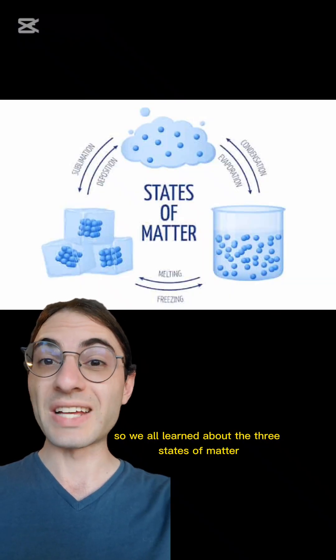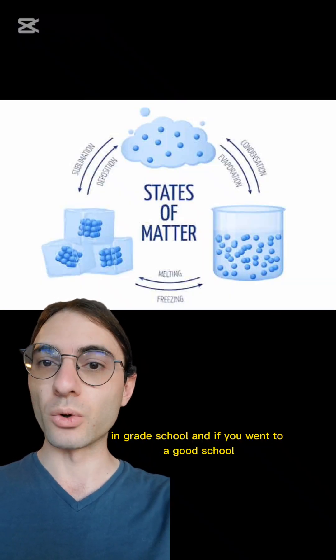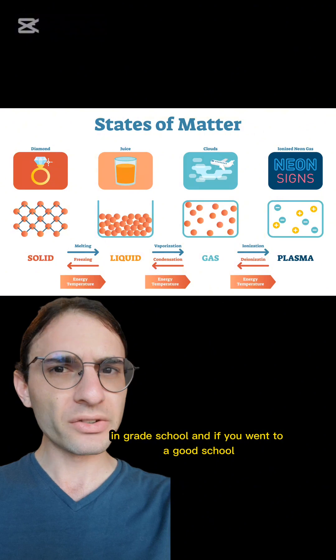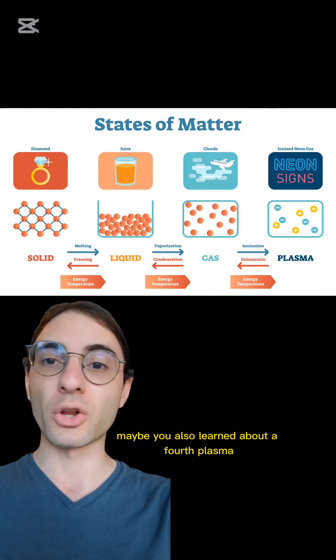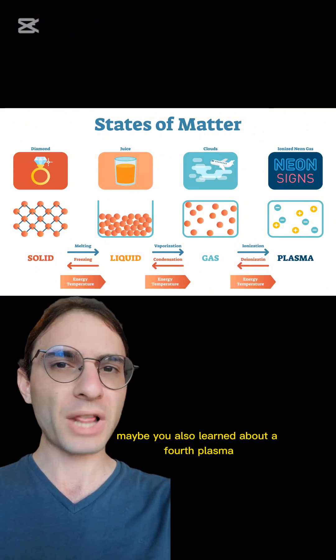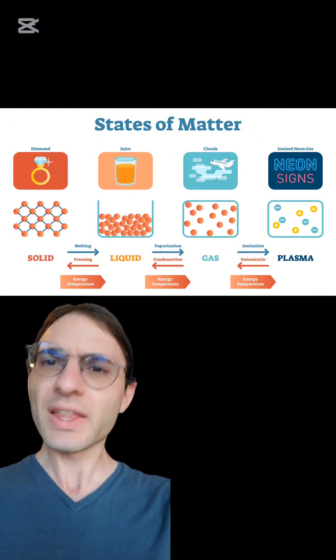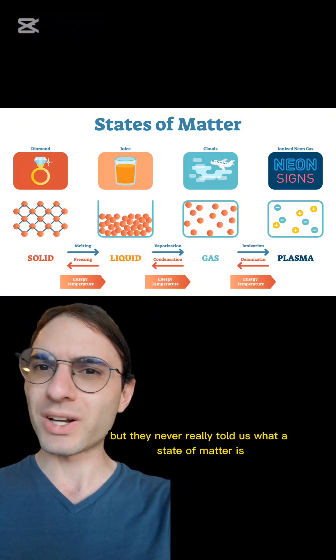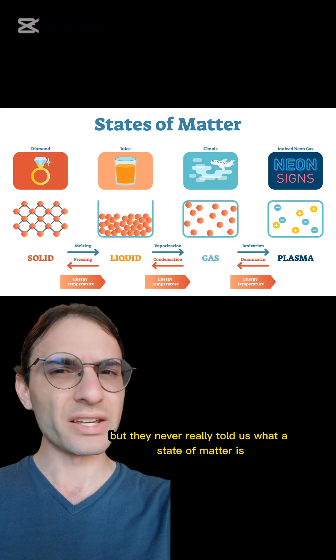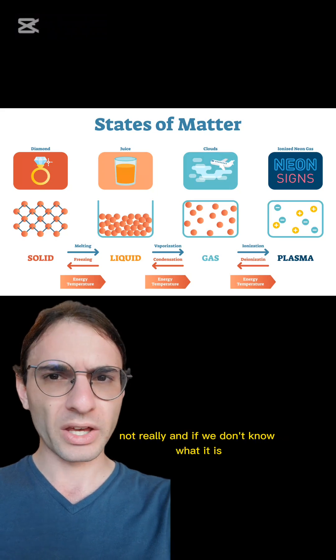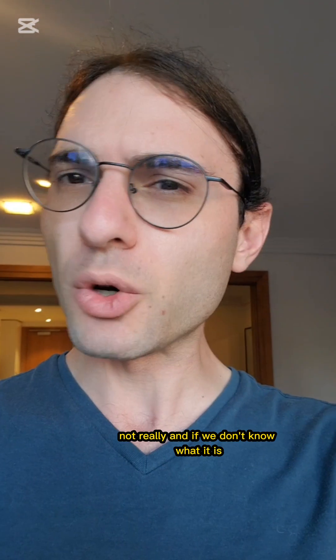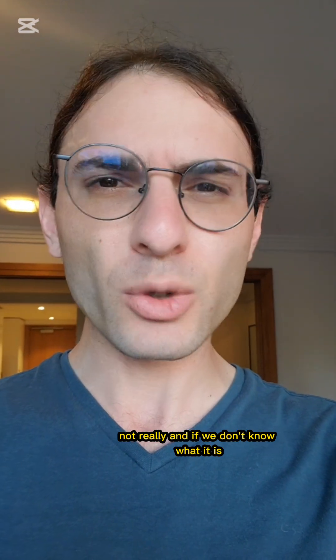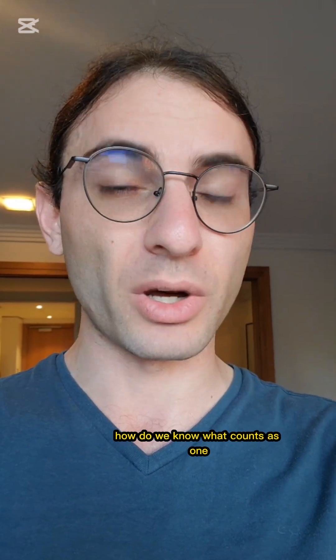We all learned about the three states of matter in grade school, and if you went to a good school, maybe you also learned about a fourth: plasma. And that's great and all, but they never really told us what a state of matter is — not really. And if we don't know what it is, how do we know what counts as one?